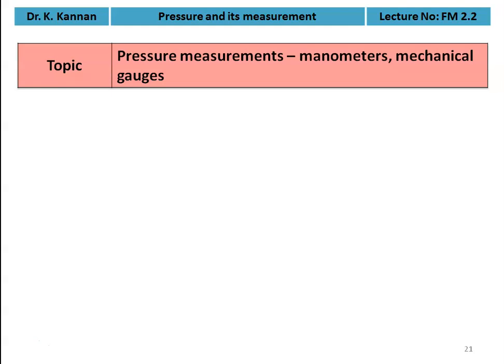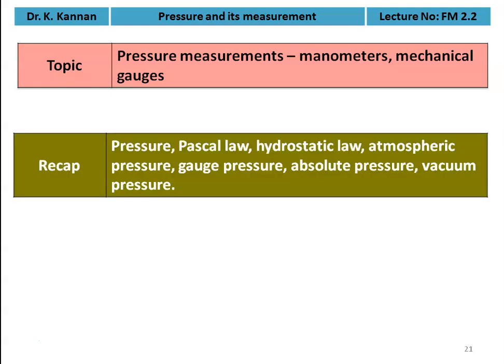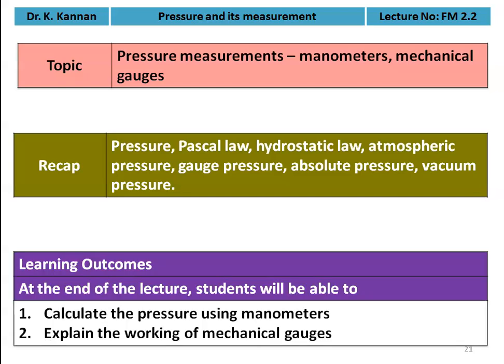In this lecture, we are going to discuss about the manometers and mechanical gauges used for pressure measurement. In the earlier lecture, we introduced pressure, Pascal's law, hydrostatic law, atmospheric pressure, gauge pressure, absolute pressure, vacuum pressure, and the relationship between these three pressures. We also studied the simple manometer and the U-tube manometer. The learning outcome: at the end of the lecture, the student will be able to calculate the pressure using the manometer and explain the working of mechanical gauges.